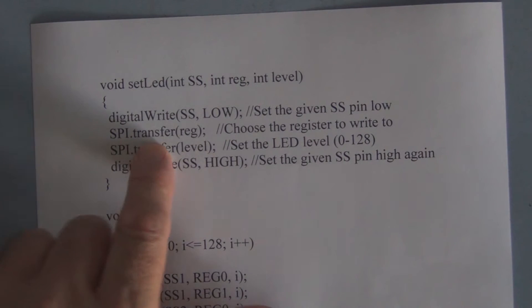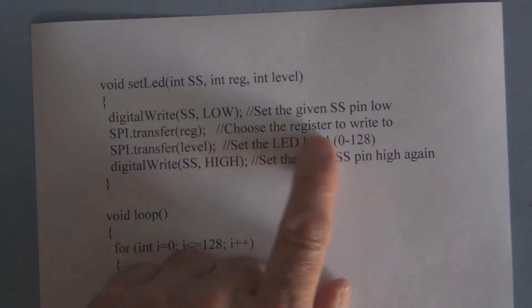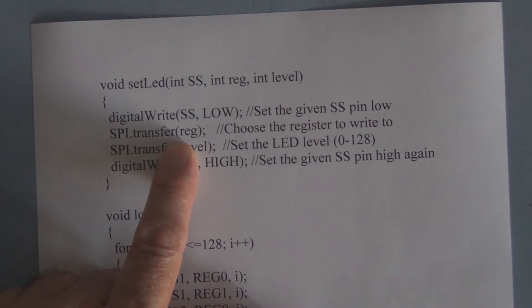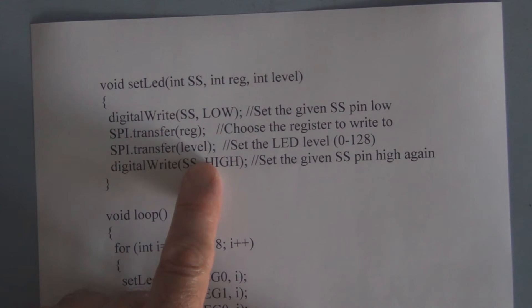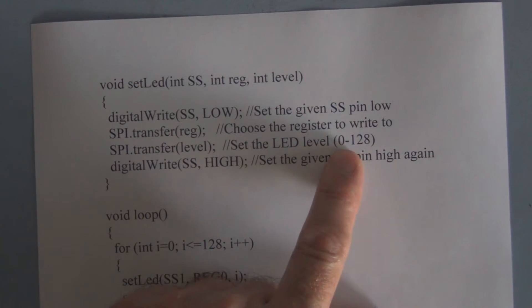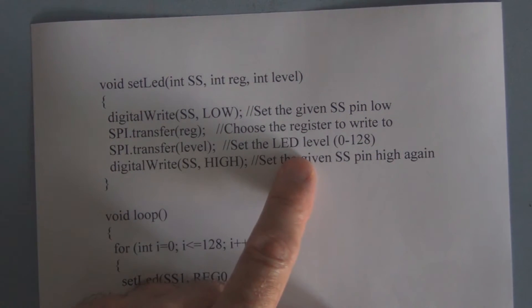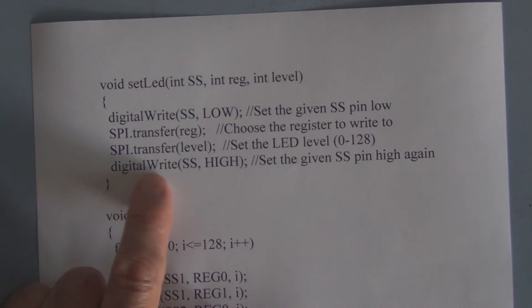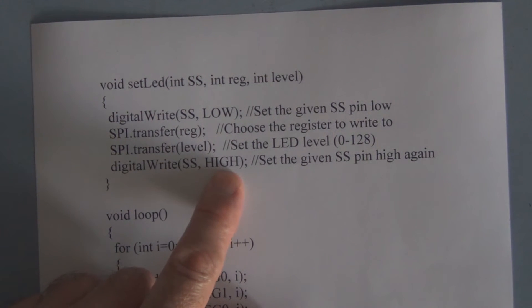SPI transfer register chooses the register, so this enters in the code for selecting the correct memory for that particular potentiometer. Then we have SPI.transfer level, which transfers the integer level, a number from zero to 128 that gets converted into binary. Both of these get shifted in as a 16-bit command, like I did with the example with the heat kit where I manually entered that 16-bit number. Then we have digital write chip select high, which turns off or disables that chip.